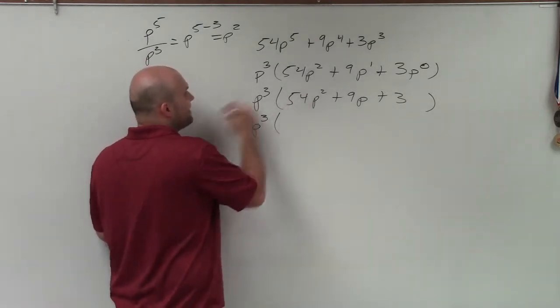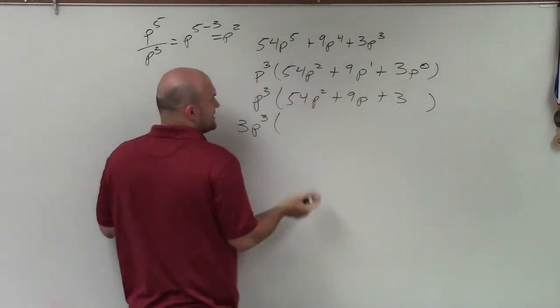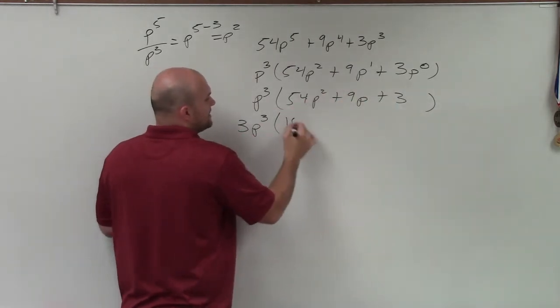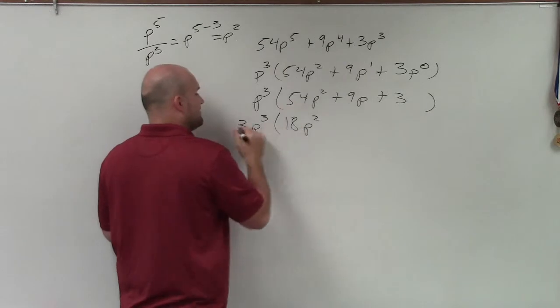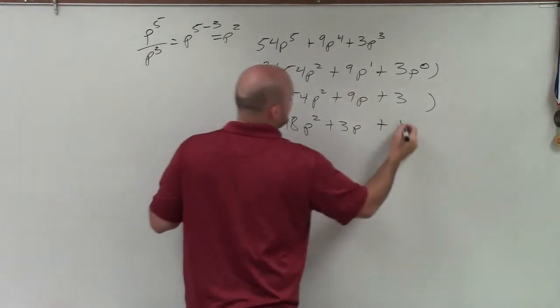So when I factor out 3, I'm technically dividing 3 by each one of my terms. So 54 divided by 3 is 18p squared. 9 divided by 3 is just going to be 3p. And 3 divided by 3 is going to give me 1.